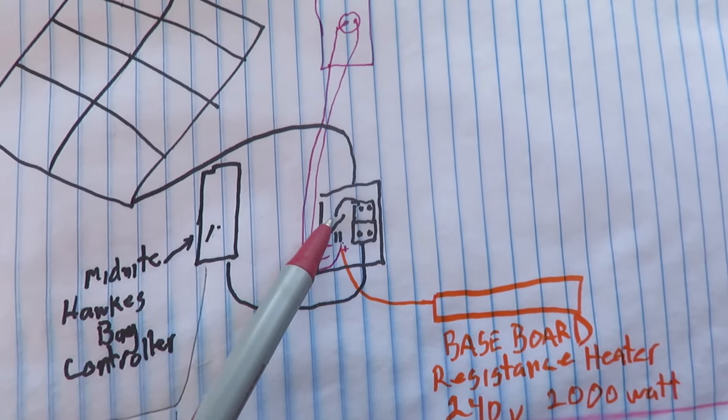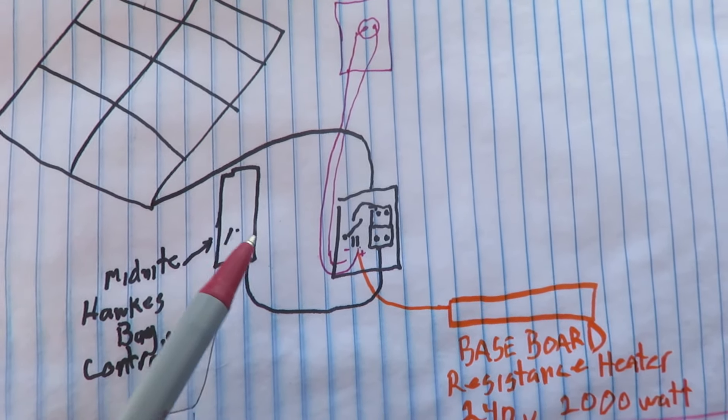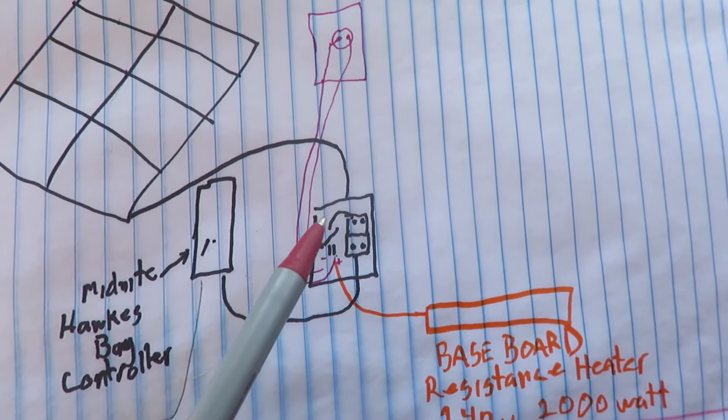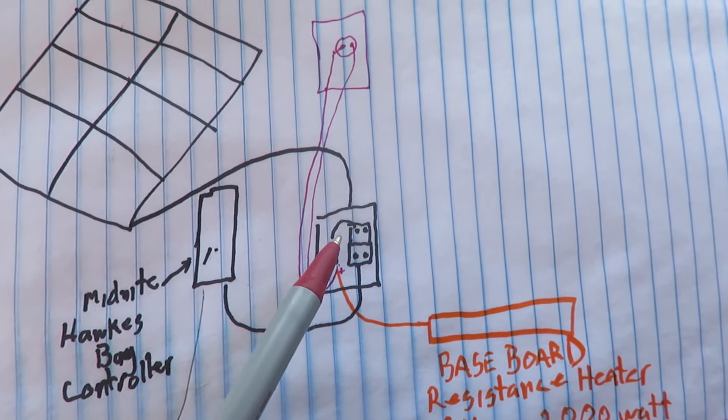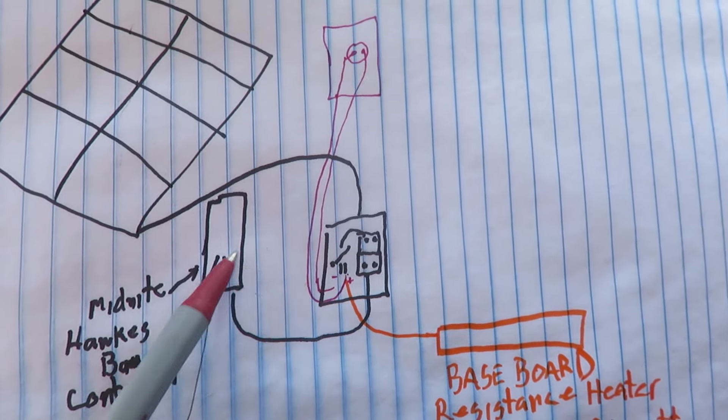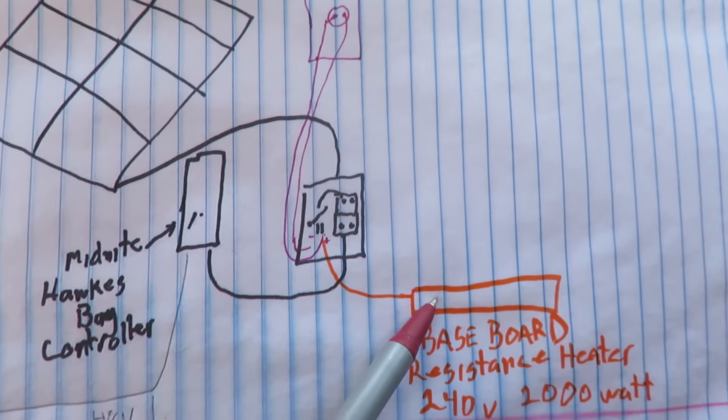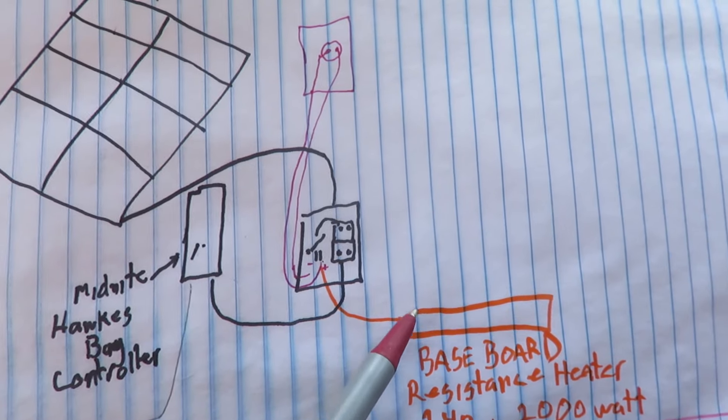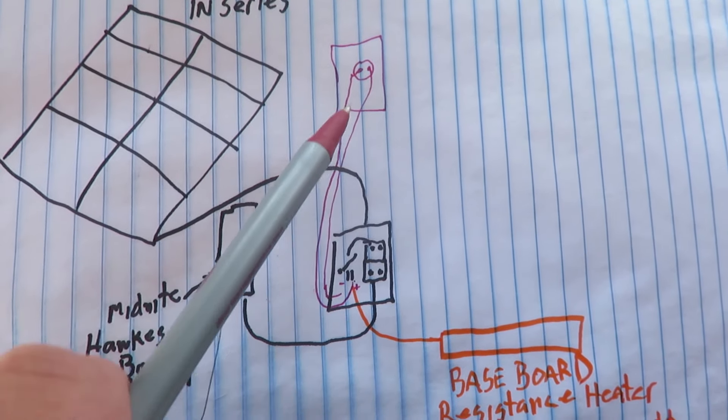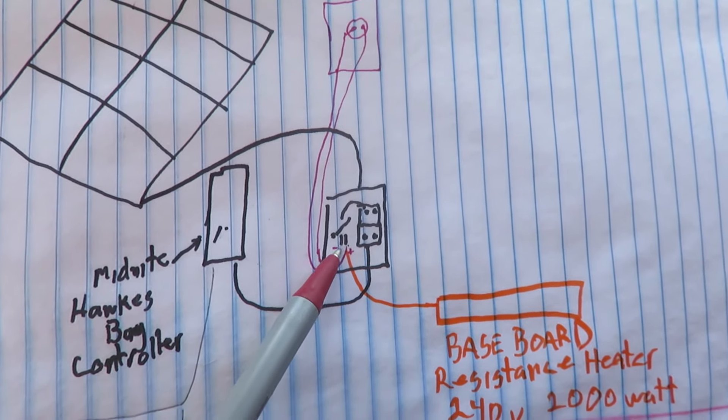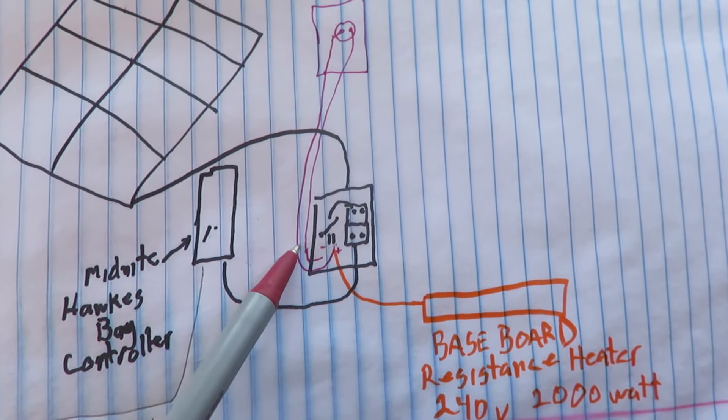There's a breaker here, breaker here. When this breaker's on it's basically bypassing the power from the controller right to the baseboard heater. To control the baseboard heater there's a switch up here, so PV comes in, goes over here through the breaker, goes up to this contactor.